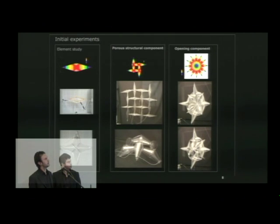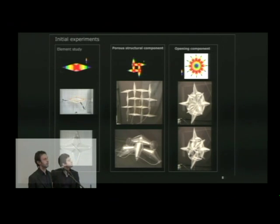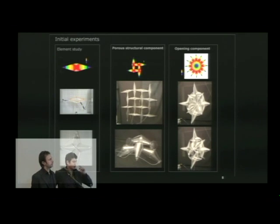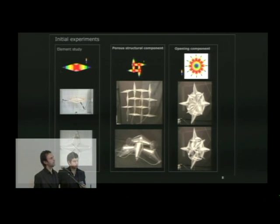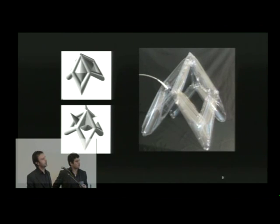Our initial experiment started with element study — we carefully measured the deformation of the element in inflate and deflate stages, and also tested the structural capacity of the element. Tristan Simon from ROPAGU helped us understand better the structural capacity and run this analysis. After that, we arranged the element in a couple of ways and got two types of prototypes: a porous structural component and an opening component. By composing these two, we reached our initial prototype — a component capable of bearing load while also being porous.